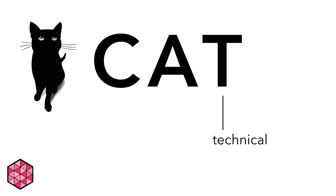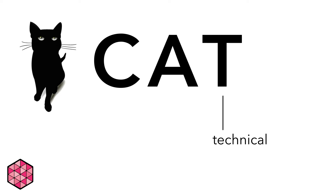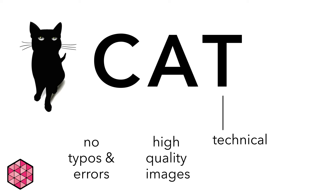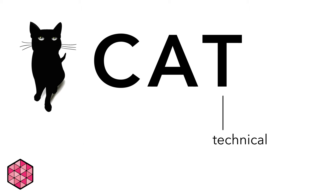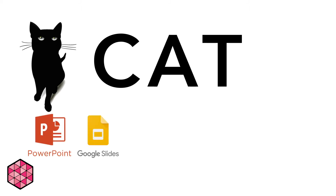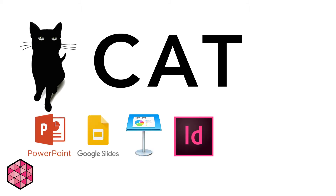Finally, there are the technical principles of design. This includes using the right software for the job, but also more abstract considerations: Is your work free of typos and errors? Are your charts, graphs, tables, and images high quality? Thinking critically about technical considerations will make your work appear more polished and professional. For a research poster, you may use software such as PowerPoint, Google Slides, Keynote, Adobe InDesign, Adobe Illustrator, or Canva. It is important to use software you know, or to learn it well enough to establish an easy workflow, so you can spend less time troubleshooting and more time on your content.